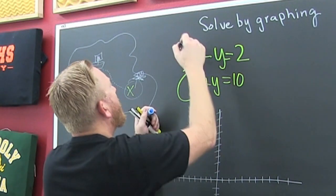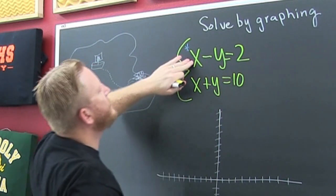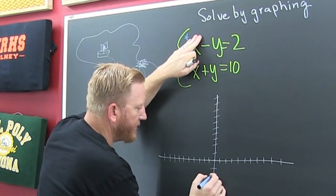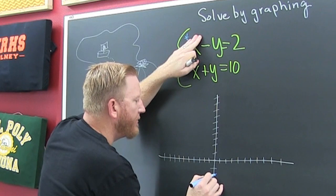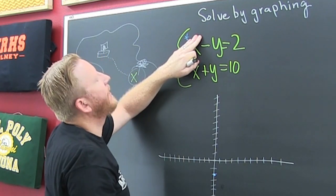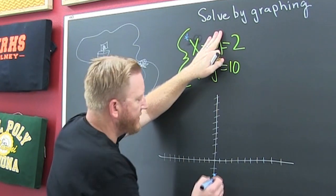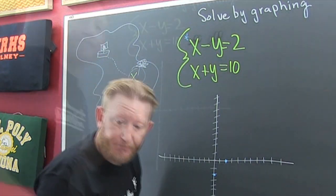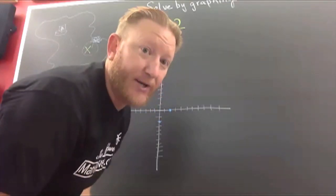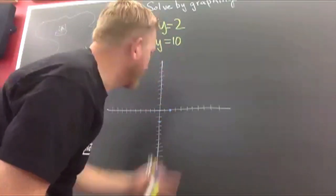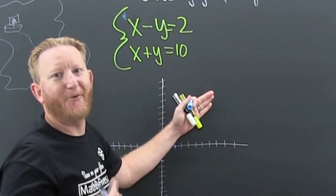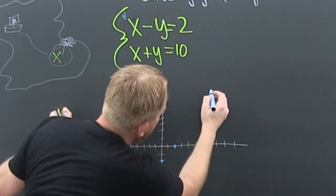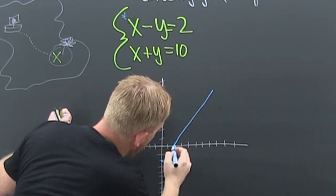Alright, so I'm gonna graph this top one. I'm gonna call it blue. If X is 0 then Y is minus 2. I'm graphing by using the intercepts. If Y is 0 then X is positive 2. Now when you're solving by graphing, you want straight lines, so you gotta get out your ruler. Connect the dots.